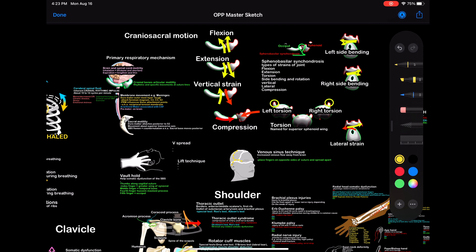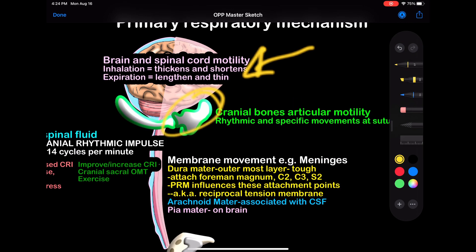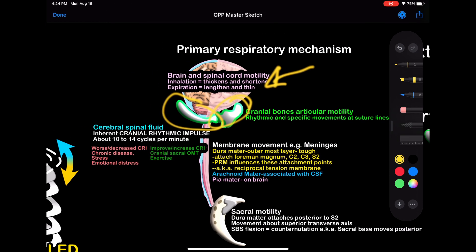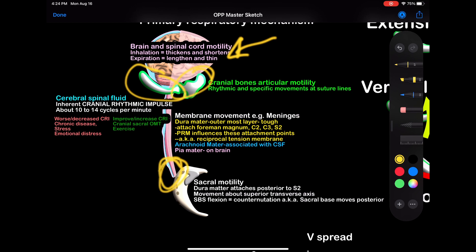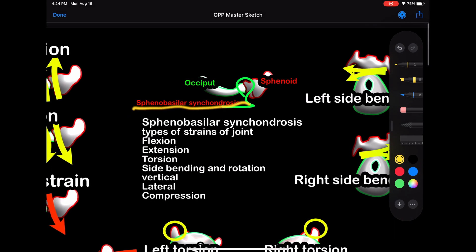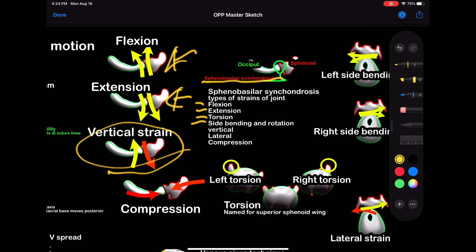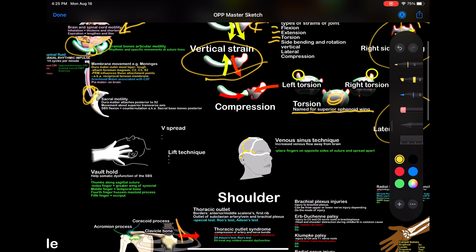Cranial-sacral motion — my favorite. Primary respiratory mechanism has different components: those include the brain, spinal cord motility, cranial bones — the sphenoid and occiput — which articulate. The cerebrospinal fluid and how it flows, and membrane movement, e.g. the meninges, which are connected to the sacrum and affect sacral motility. So we have the occiput and the sphenoid — the sphenobasilar synchondrosis joint. Movements include flexion, extension, torsion, and side bending. Torsions are named for the superior sphenoid wing. Here are some cranial techniques.